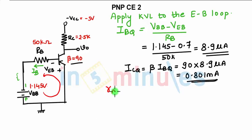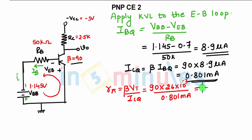Once you know ICQ, you can find the parameters. Rpi is nothing but beta VT upon ICQ. Beta is 90. VT we always take as constant 26 millivolts. All divided by ICQ, 0.801 milliampere. So this will give you Rpi as 2.921 kilo ohms.